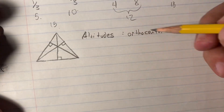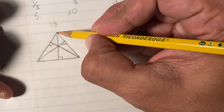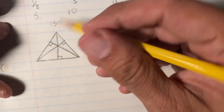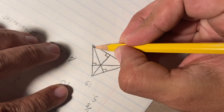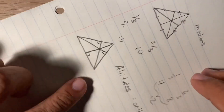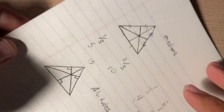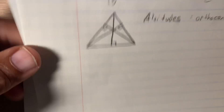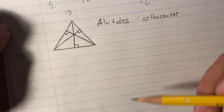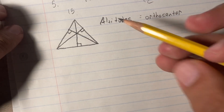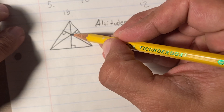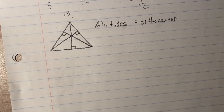Last, altitudes are the height of the triangle — from the top point going straight down at a 90-degree angle. Finding the height from each vertex, if the point where all three altitudes meet ends up inside the triangle, it is an acute triangle. If it ends up outside the triangle, it is an obtuse triangle. If it meets at a corner, then the triangle is a right triangle. That point is called the orthocenter.